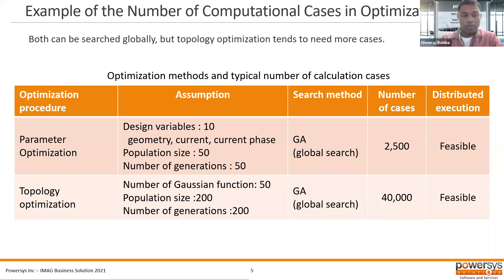Looking at computation time required for these optimizations: for parametric optimization, for example, with 10 design variables pertaining to geometry, current, and current phase, a population size of 50 and number of generations of 50, using a global search with a genetic algorithm, the total number of cases is 2,500, and it's possible to perform distributed calculation on a local network. For topology optimization, 50 Gaussian functions are defined instead of parameters, with a population size of 200, number of generations of 200, also using a genetic algorithm, giving 40,000 designs or cases, which can also be distributed to HPC or a local network.